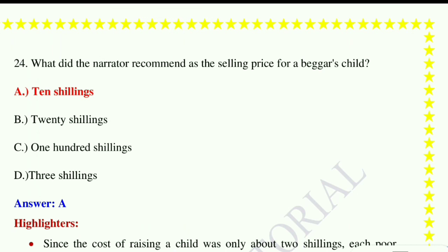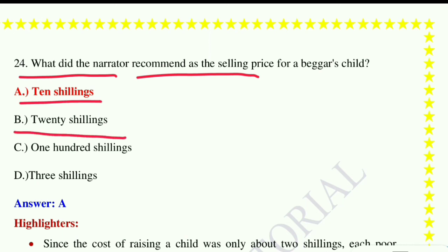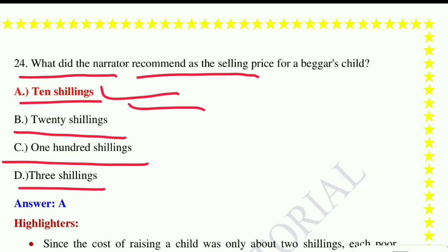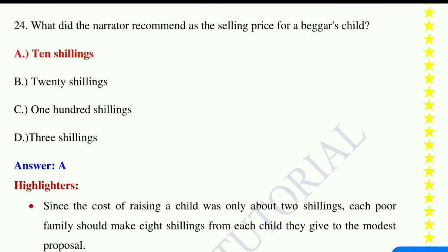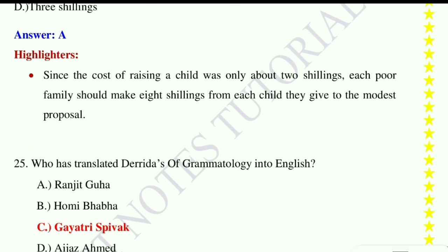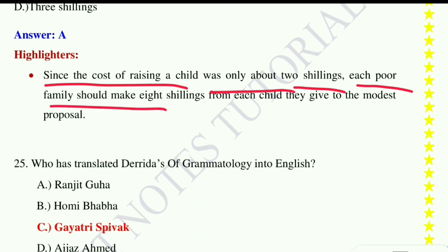Question number twenty-four: What did the narrator recommend as the selling price for a beggar's child? Option A: ten shillings, option B: twenty shillings, option C: one hundred shillings, option D: three shillings. The correct answer is option A, ten shillings. Since the cost of raising a child was only about two shillings, each poor family should make eight shillings from each child they give to the Modest Proposal.